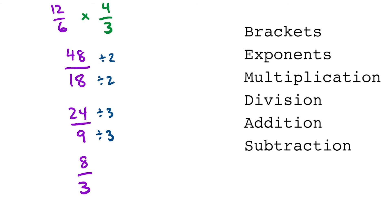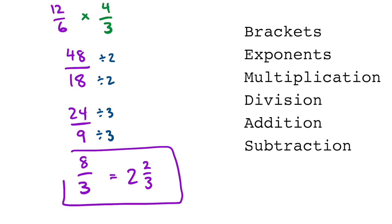If you prefer mixed numbers instead of improper fractions, we can reduce that as well. There are two full groups because 2 times 3 is 6, leaving 2 behind. So this could be either 8 over 3 or 2 and 2 thirds. And that's our final answer.